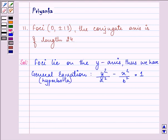Now we know that foci equals (0, ±c) and here we are given foci as (0, ±13). Thus we have the value of c equal to 13.